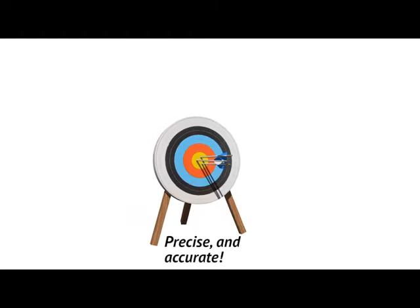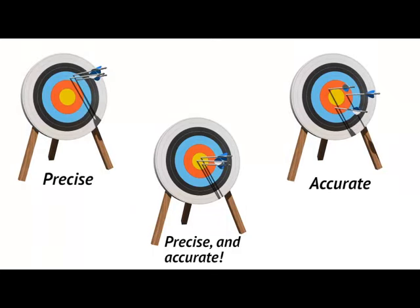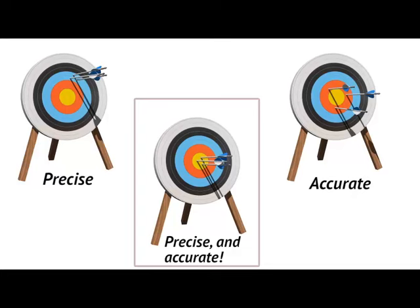Both precision and accuracy are important for geodetic surveying. The aim is to get measurements that average as close as possible to the truth, and to do so in a way that is repeatable, so you can confidently compare them to any future measurements.